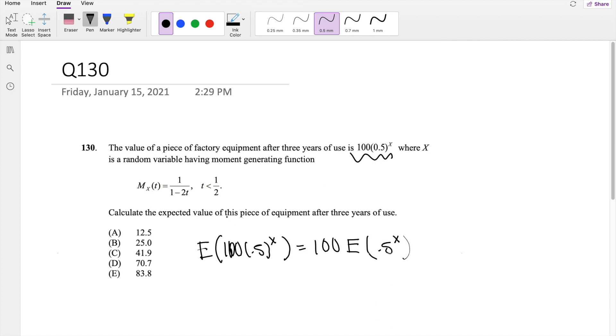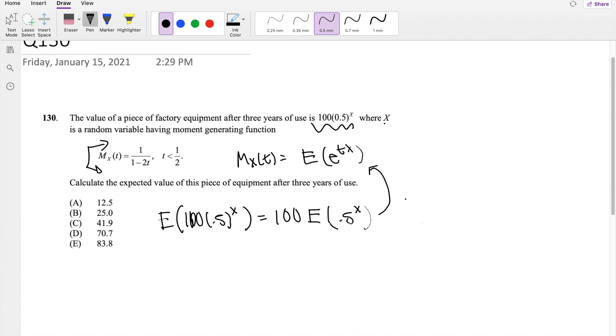Also recall that they tell you that X has a moment generating function given by right here. And the moment generating function, the definition of moment generating function is equal to the expected value of E to the TX. So we want to somehow try to make this look like this, so we can substitute that moment generating function in.